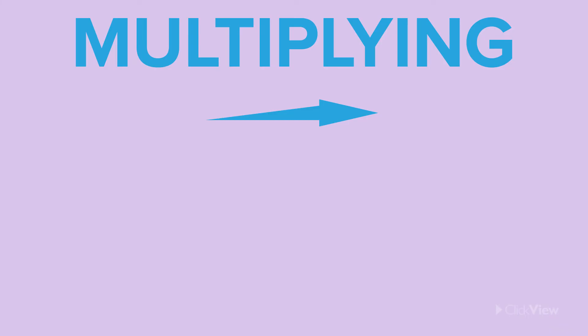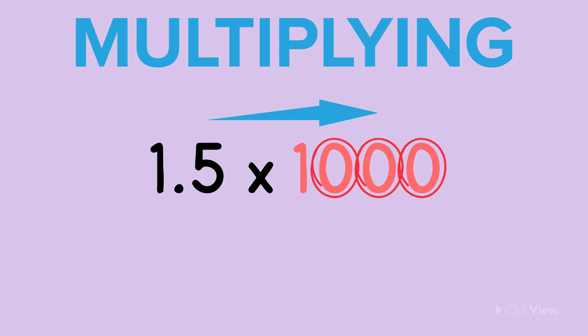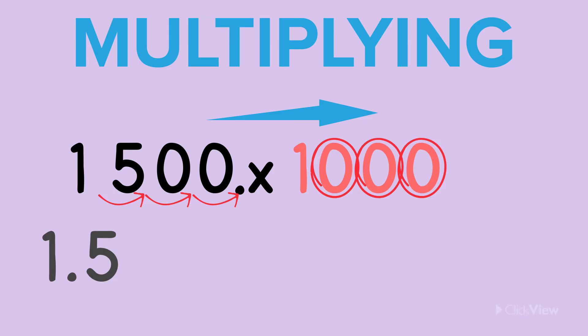How do you think we might find out what 1.5 times 1000 is? That's right. Because there are three zeros in 1000, we move the decimal point three places to the right. Now we know that 1.5 times 1000 equals 1500.